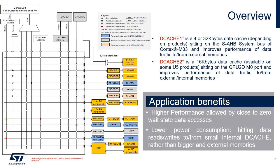In the figure, the DCache1 master bus used to access external memories is completely independent of the bus used to access internal SRAMs. DCache2 is placed on the AHB bus driven by the port M0 of GPU2D and caches all the memory regions accessed by it.